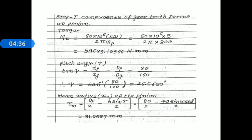Next, calculate the pitch angle gamma for the pinion. The relation is: tan gamma equals D sub xp divided by D sub xg, which is 80 divided by 160. Taking the inverse tangent, the pitch angle for the pinion, gamma, equals 26.5650 degrees.